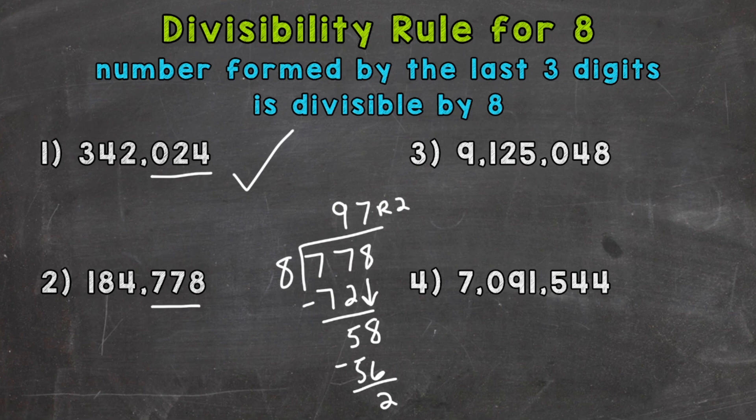So 97 remainder 2. 778 is not divisible by 8. Therefore, our original number of 184,778 is not divisible by 8 either.